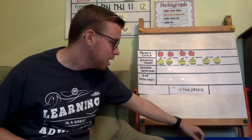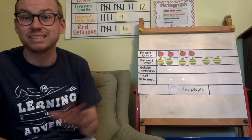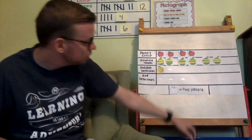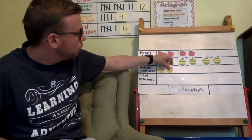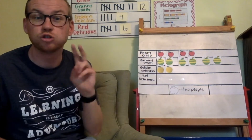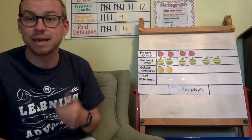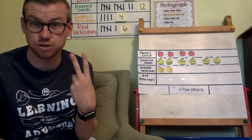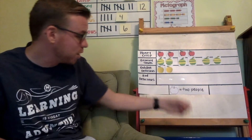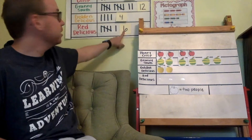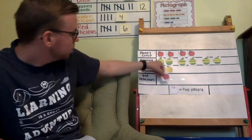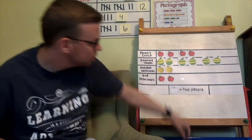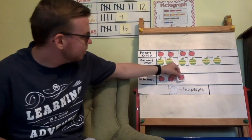Let's do Golden Delicious — counting by twos until we get to four: two, four. Only two apples go on the pictograph. The last one is Red Delicious — count by twos until we get to six: two, four, six. Three apples for Red Delicious.